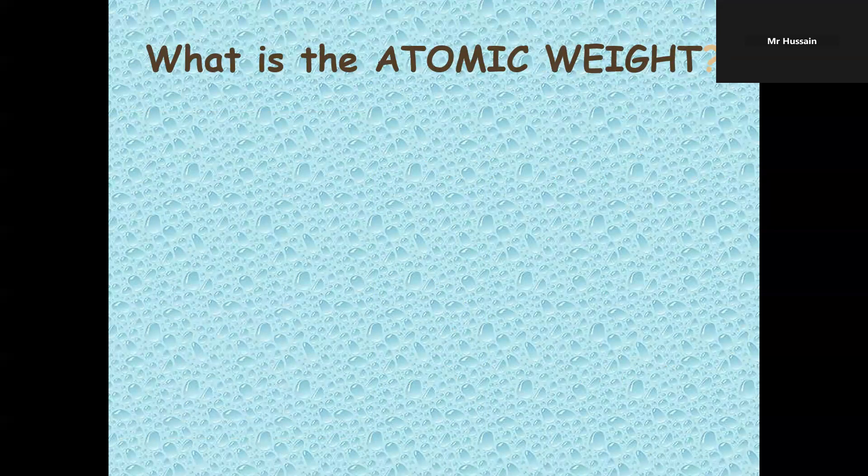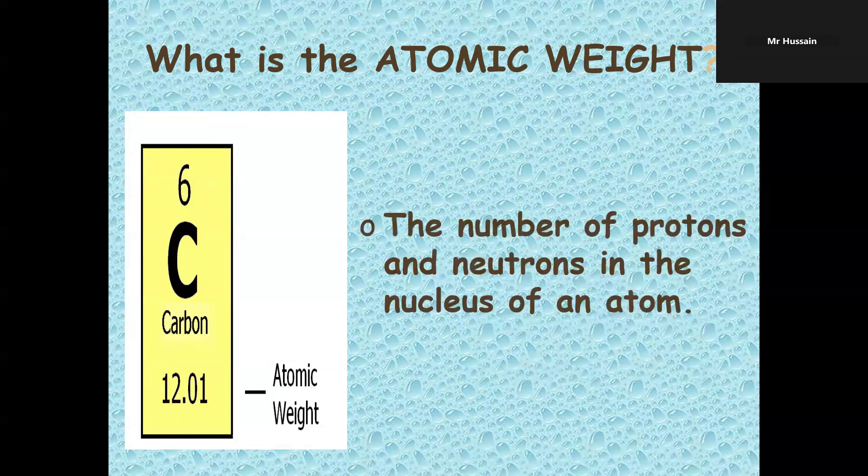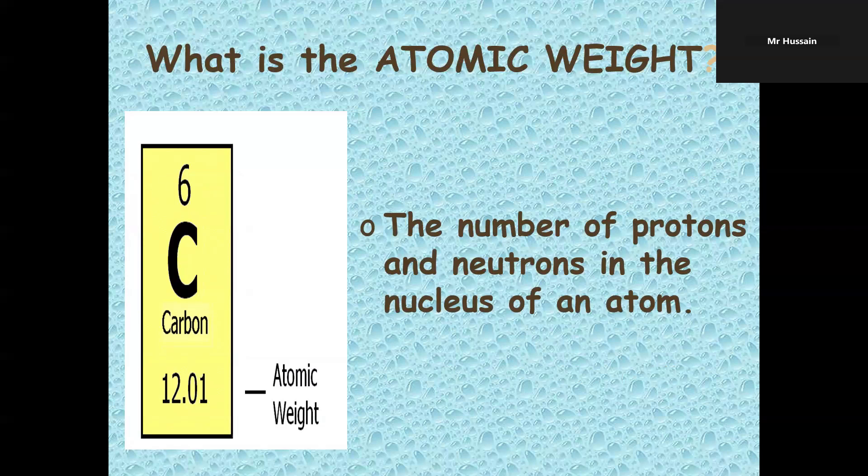What is the atomic weight? You see the number with decimal at the bottom of this picture. The number of protons and neutrons in the nucleus of an atom is known as the atomic weight.